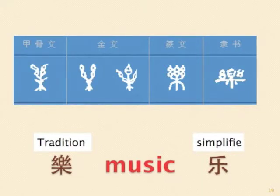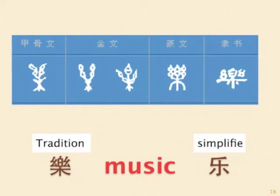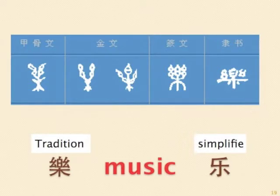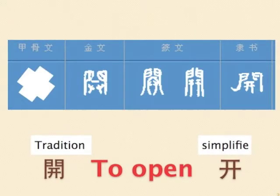Next word: music. The ancient word stands for a wooden rack with silk or string on it, which means an instrument and the music played by it. The traditional form basically keeps the original format, while the simplified form greatly reduces the upper part of the word.